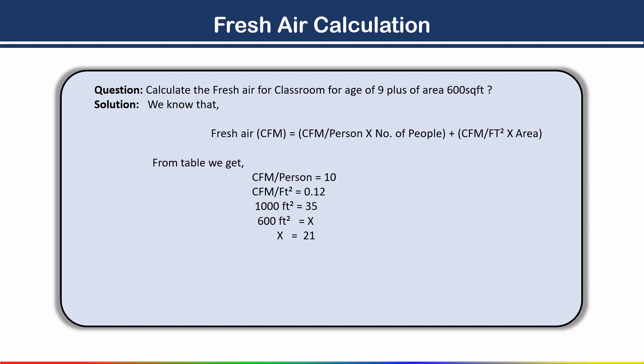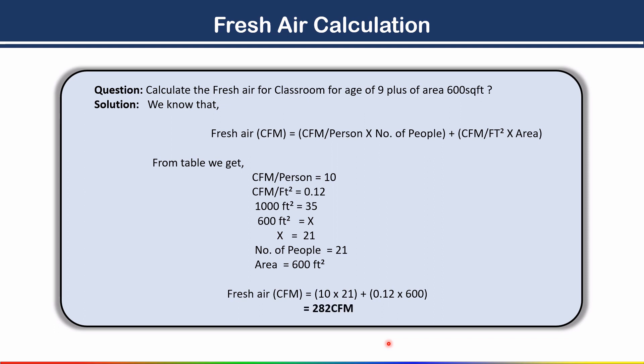The number of people in the classroom age 9 plus is 21. The area is 600 square feet. Now using the formula: Fresh Air CFM = (CFM per person × number of people) + (CFM per square feet × area) = (10 × 21) + (0.12 × 600) = 282 CFM. This is our fresh air CFM. This is how you calculate the fresh air CFM for your space. This is all about fresh air calculation.